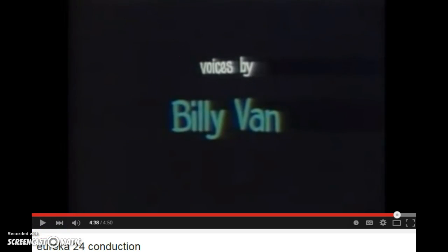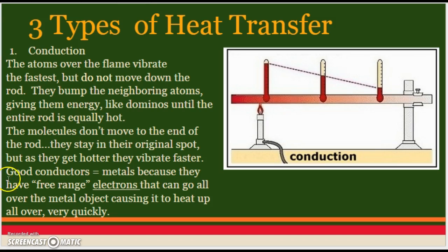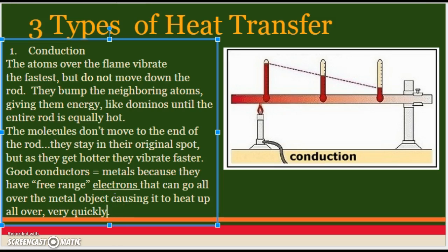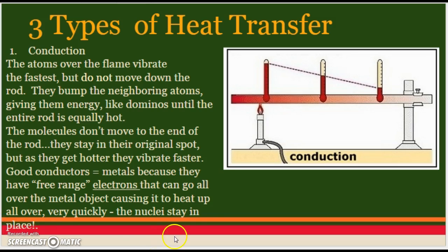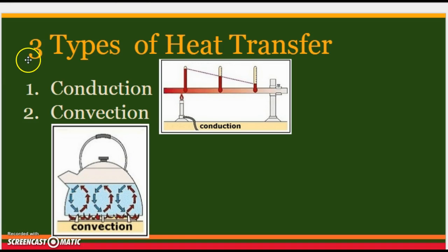So going back to our notes: metals are good conductors because they have free-range electrons that can go all over the metal object, causing it to heat up all over very quickly. It still follows the same rule that the nuclei stay in place — that's extremely important. The electrons are free-range and bouncing all over like crazy in a metal, and that allows it to heat up much quicker, but the nuclei stay where they are. So we have three types of heat transfer — the first was conduction, and now our second type is convection.